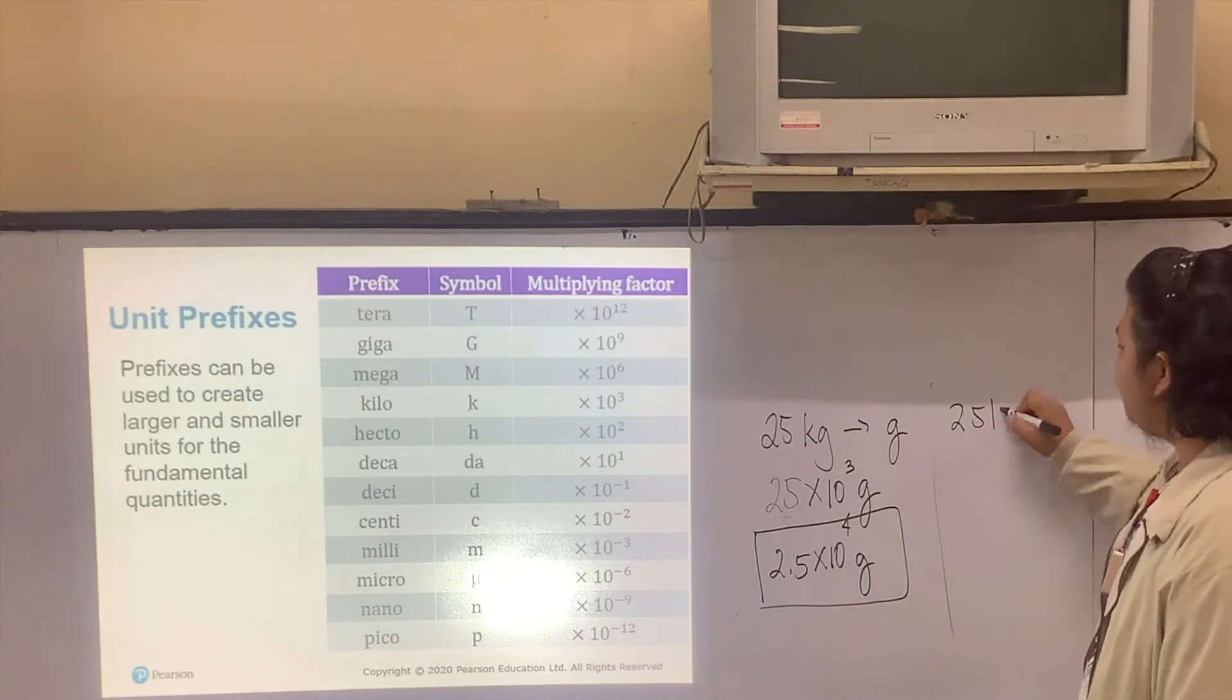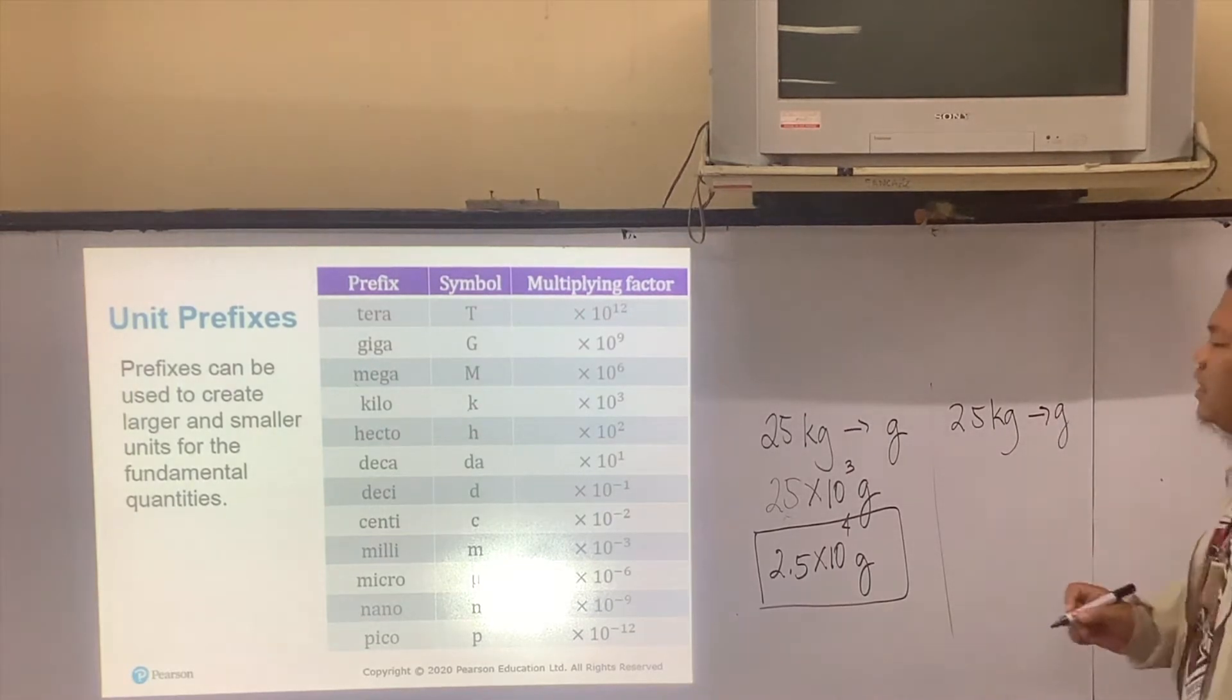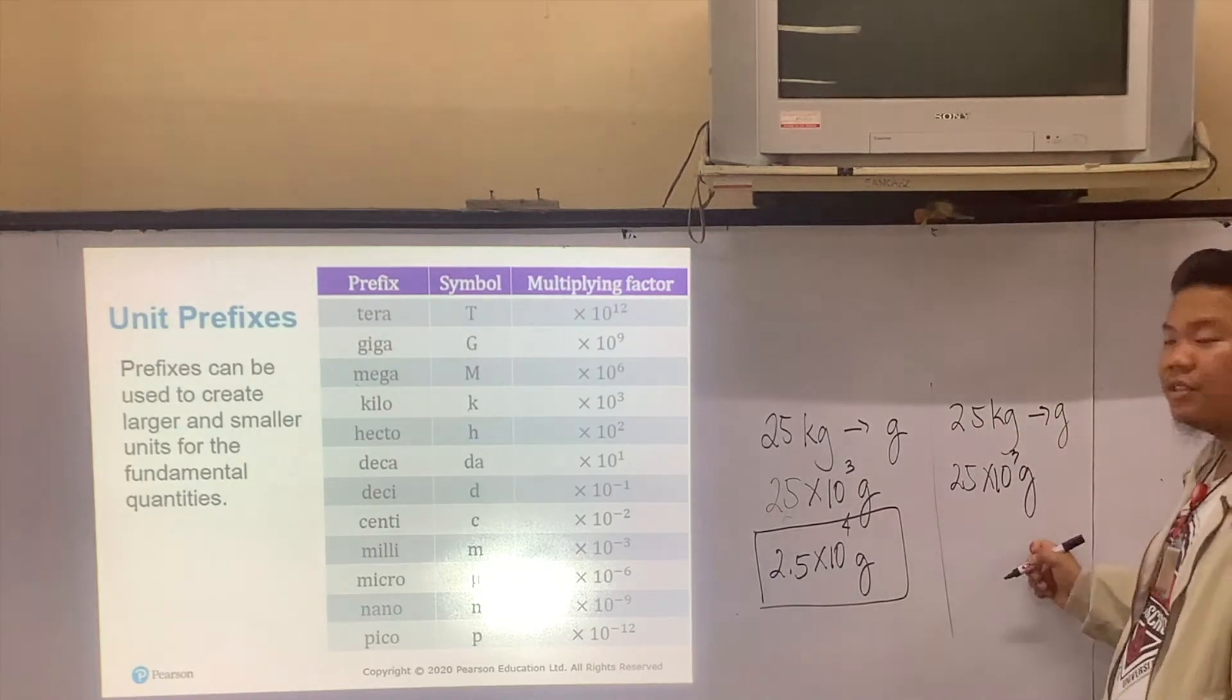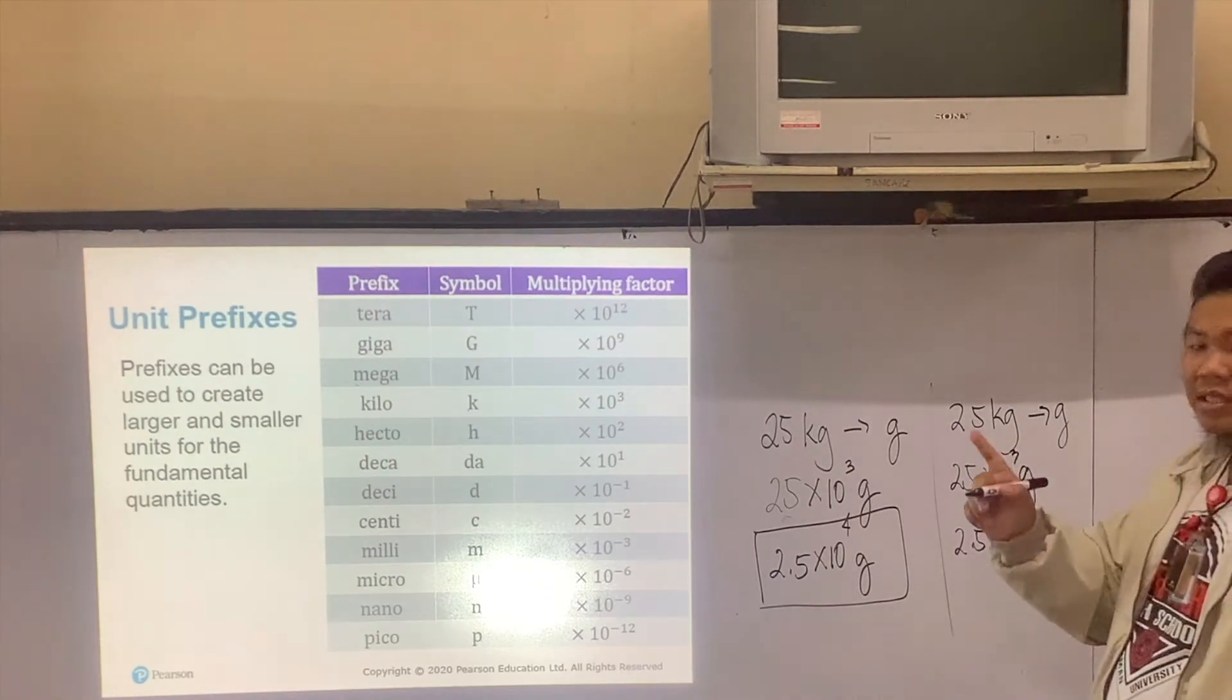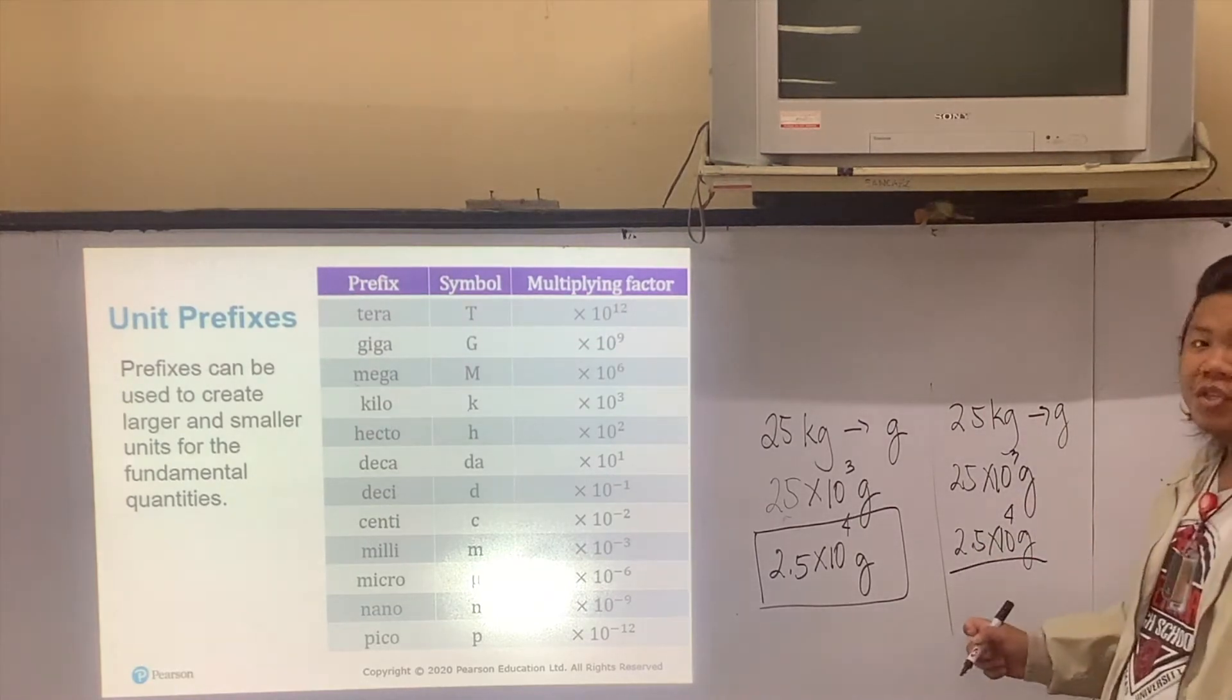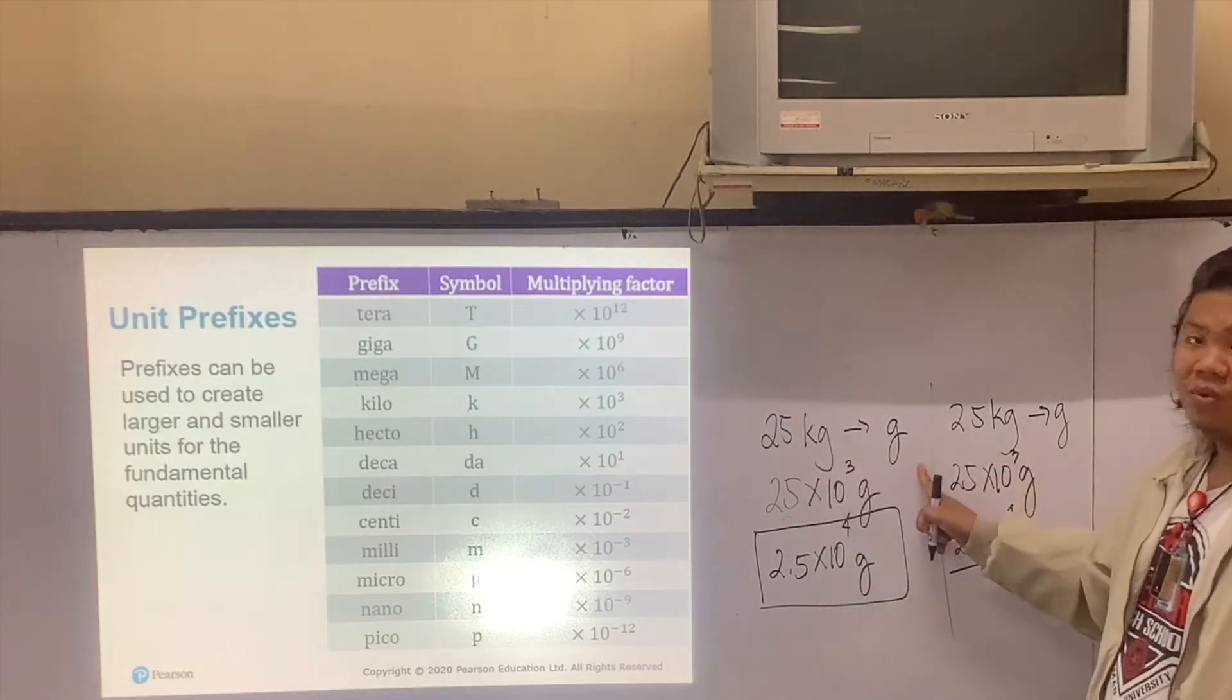So you have 25 kilograms, and you want to convert this into grams. I'll write 25. Kilo means 10 to the power of 3, then I'll copy grams. I'll make this 2.5, and I'll add 1 since I moved to the left one place. And there you go, 25 kilograms converted to grams.